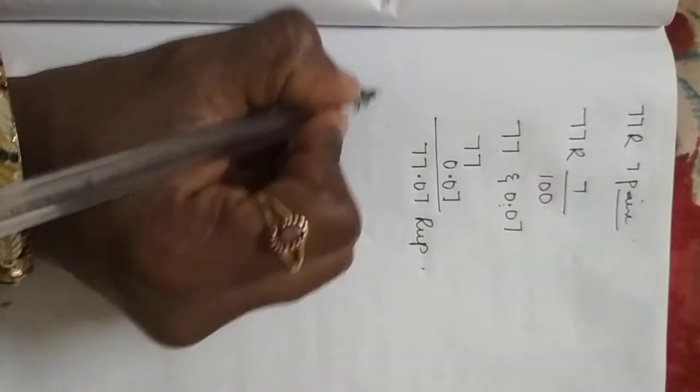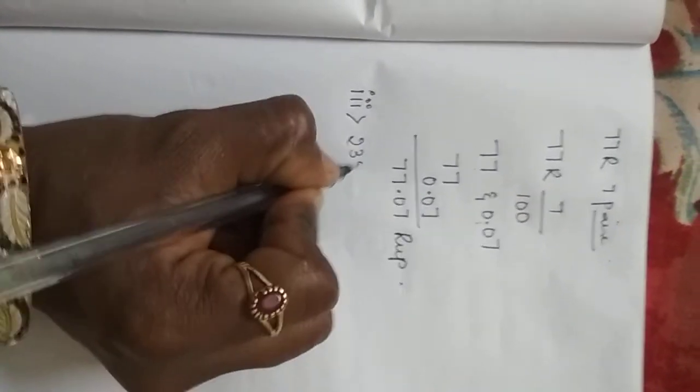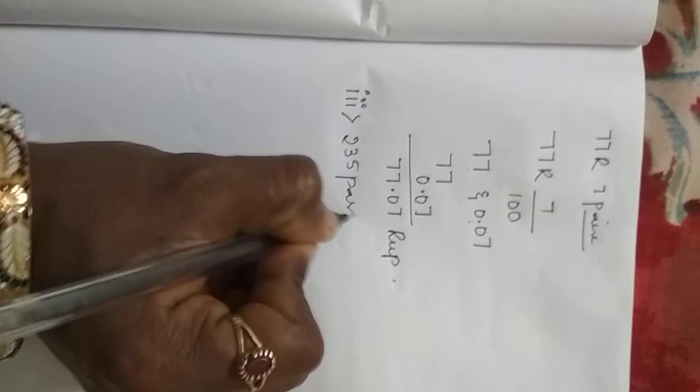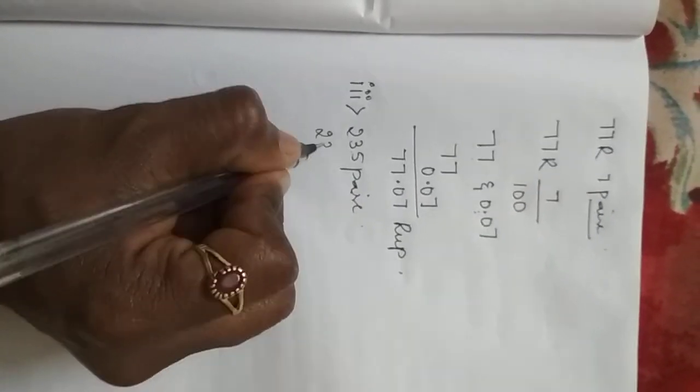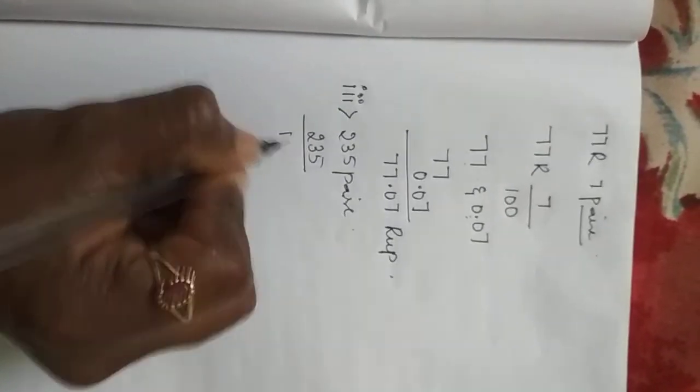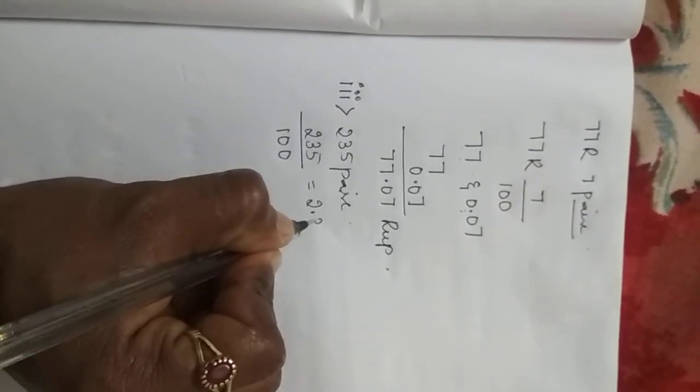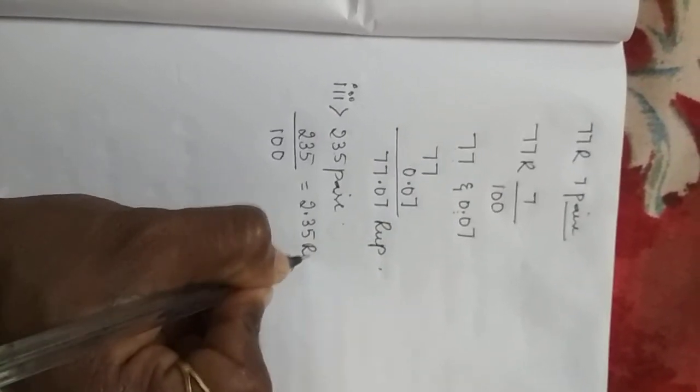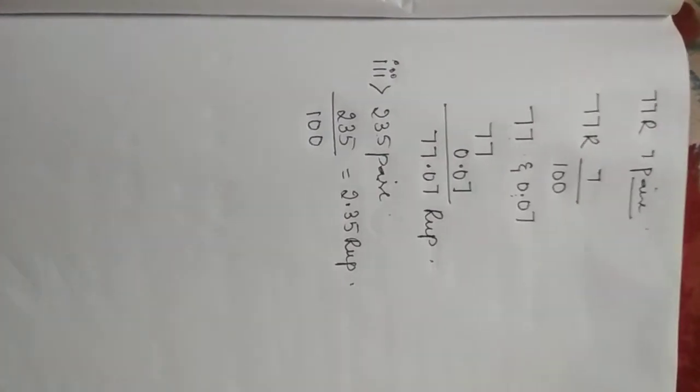Understood? Yes. Next, third one: 2.35 paisa. To convert paisa into rupees, what you have to do? Divide it by 100. What you will be getting? 2.35 rupees. Is it clear, children? Yes.